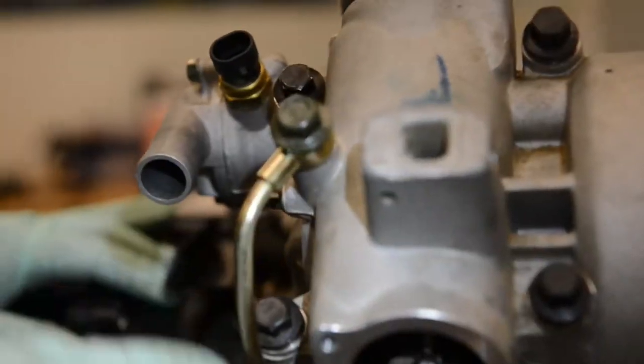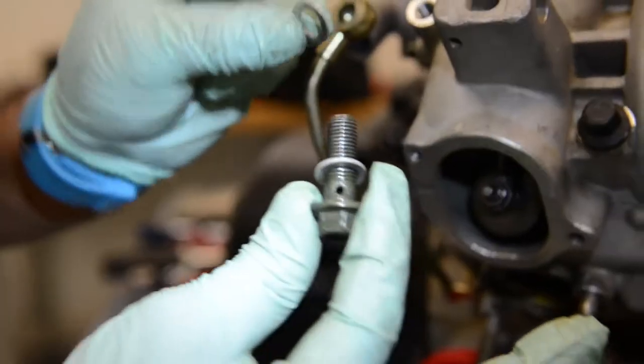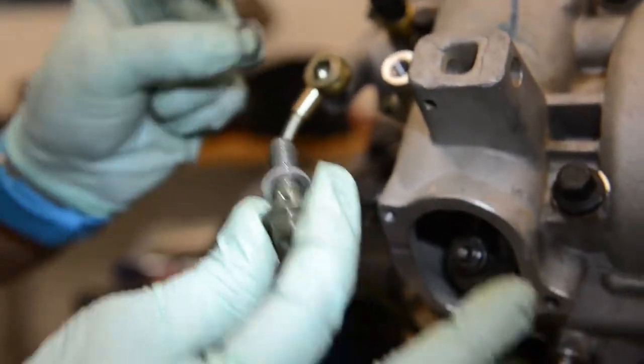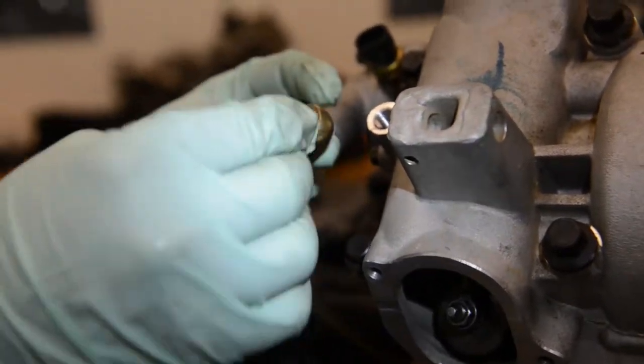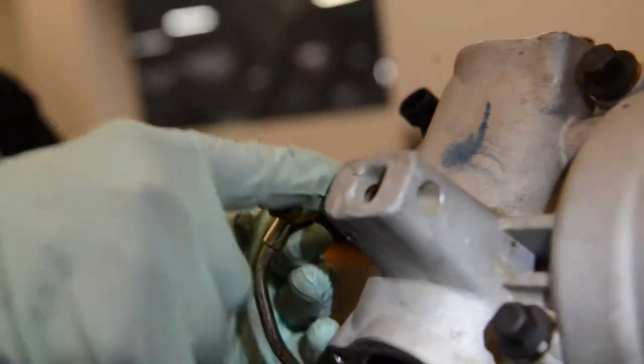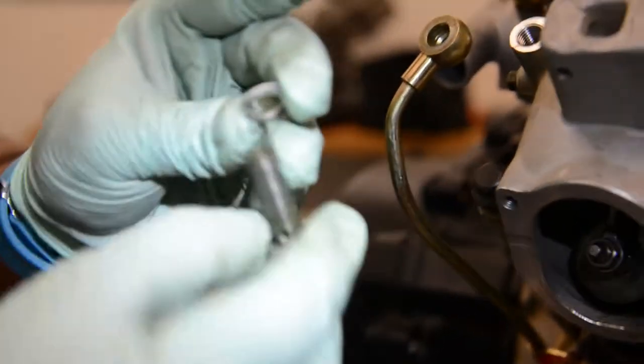Next you'll need to remove the oil tube from the top of the head and make sure to retain the copper washers that seal the oil tube to the top of the head. There's an 8 millimeter bolt that allows you to move the oil tube from the top of the head to gain access to the four bolts.